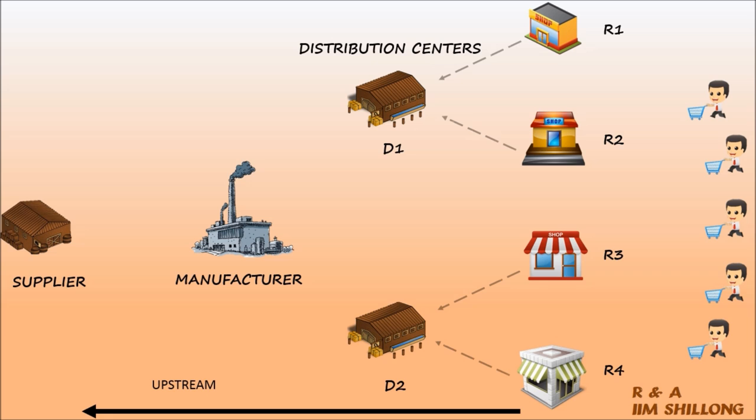In the upstream, the retailer orders the necessary quantities from the distributors, which in turn is communicated to the manufacturer. The manufacturer accordingly procures raw materials from the suppliers.